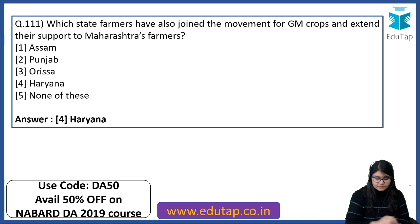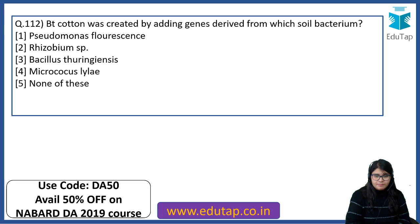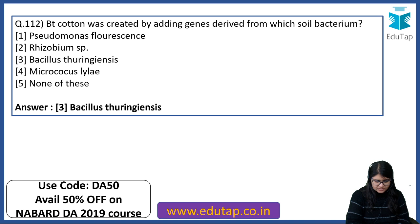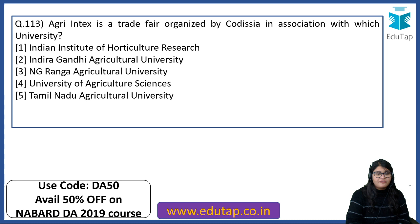Bt cotton was created by adding genes derived from which soil bacterium? Ht Bt cotton is a herbicide Bt cotton and is one of the genetically modified crops. The answer is Bacillus thuringiensis — that is the soil bacterium. Agri Intex is a trade fair organized by Codissia in association with which university? The right answer is Tamil Nadu Agricultural University.